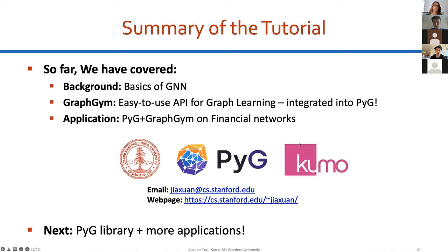To summarize part one of this tutorial: we covered the background and basics of GNN models, introduced GraphGym as an easy-to-use API for graph learning that is fully integrated into the PyG library, and discussed a real-world application using PyG and GraphGym on financial networks. My email and webpage are listed if you want to reach out. Next, my colleague Rex Ying will talk about the PyG library and applications from his research.